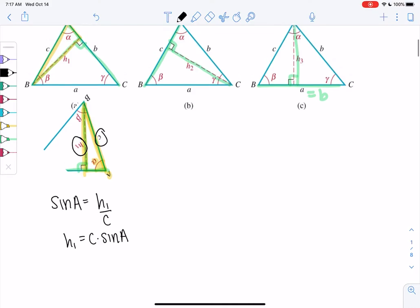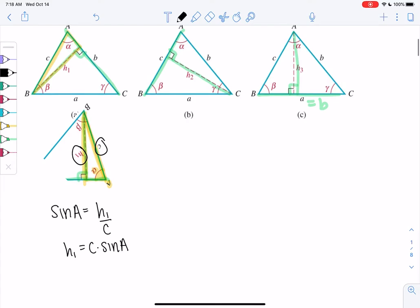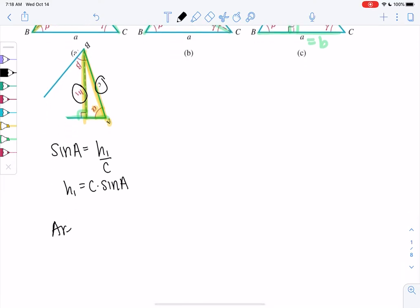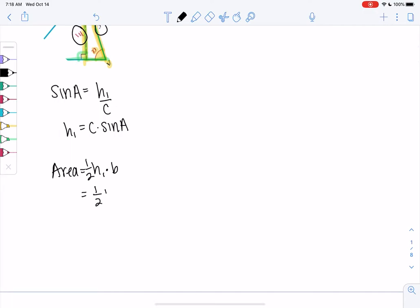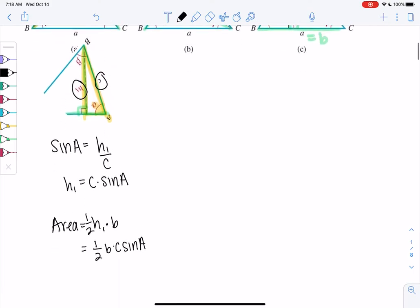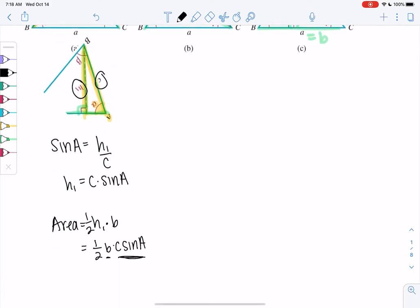So then area of this triangle will be H1 times base or b. One half H1 times base. I'm going to put the b in the front, times c sine of A. So that's area of this triangle, the base times the height times one half.